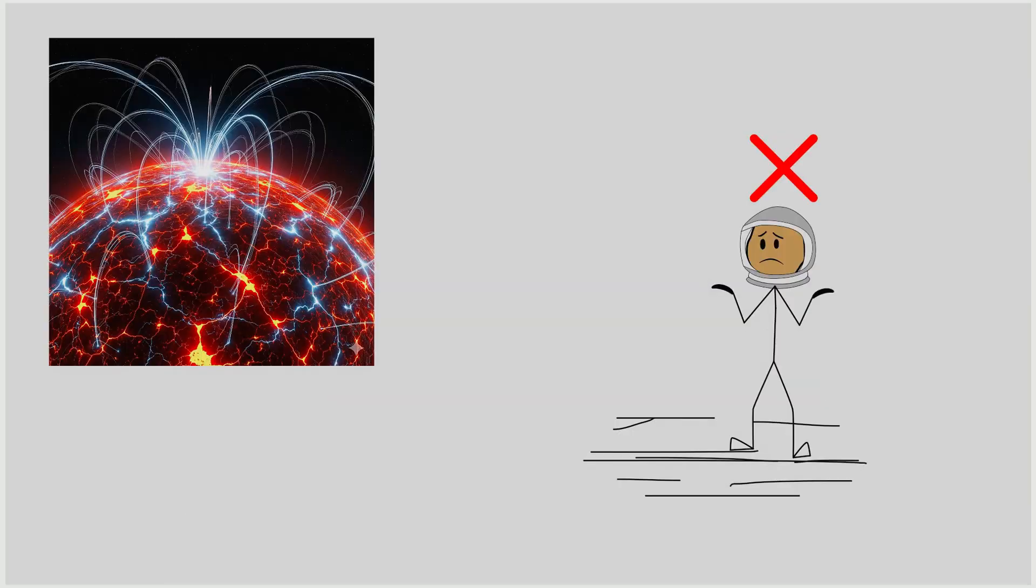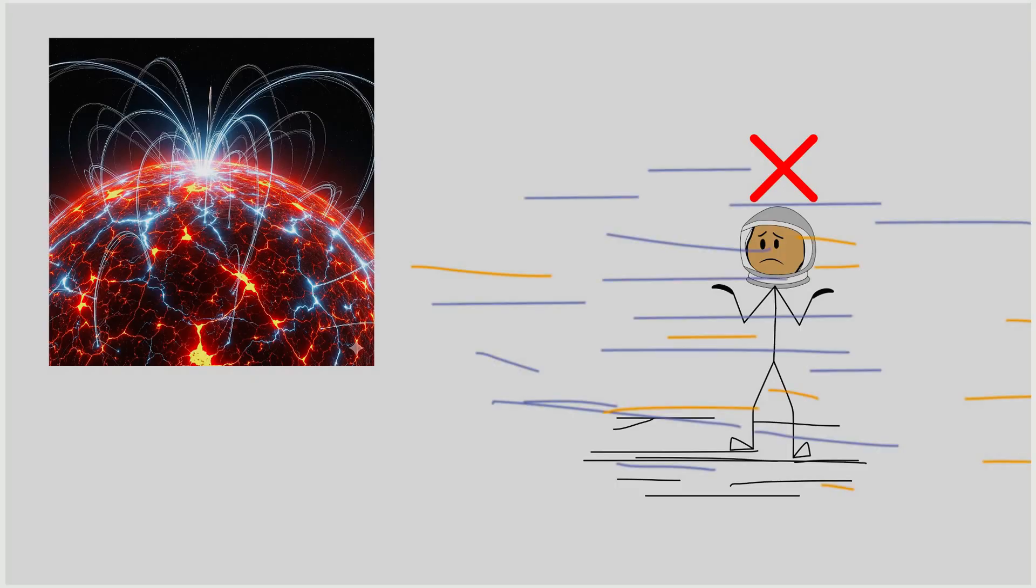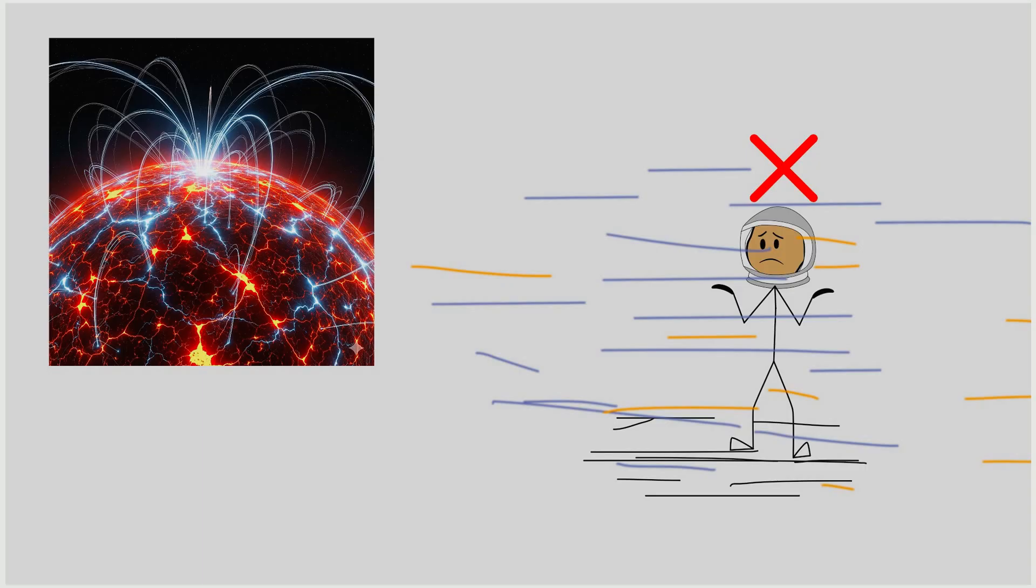The environment near a magnetar is lethally radioactive, with constant bursts of X-rays and gamma rays. The surface temperature can exceed 10 million Kelvin. Any matter approaching it would be shredded by tidal forces and bombarded with radiation.